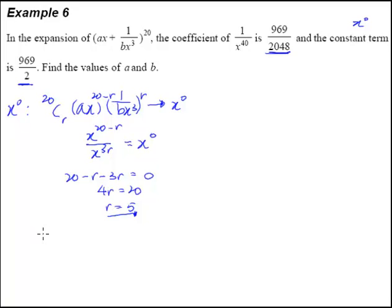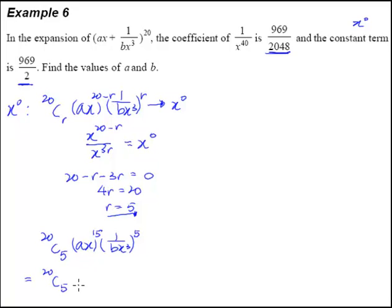We have 20C5, and of course ax raised to the power of 15 and 1 over bx cubed raised to the power of 5. Simplifying this: 20C5 is a monstrous number so we'll leave it. We have a to the power of 15 and x to the power of 15 in the numerator. At the denominator there is a corresponding x to the power of 15, so these cancel. We are left with 20C5 times a to the power of 15 over b to the power of 5. This is the term independent of x.